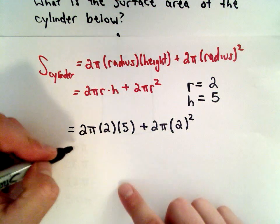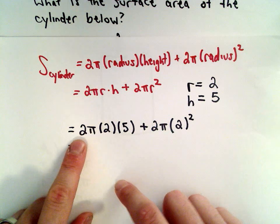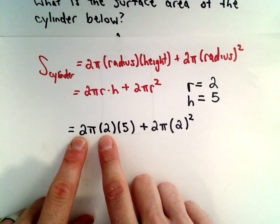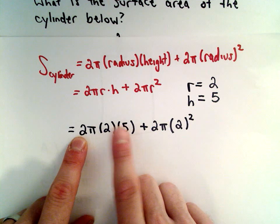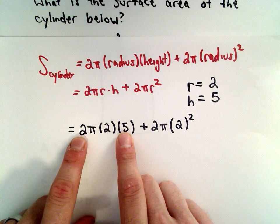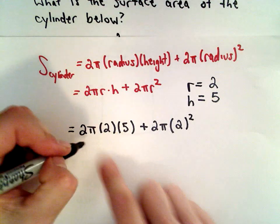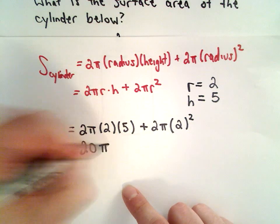So now we just simplify. If I take 2 and multiply it by 2, that's 4. 4 multiplied by 5 is going to be 20. We still have the π hanging out, so we'll have 20 multiplied by π.